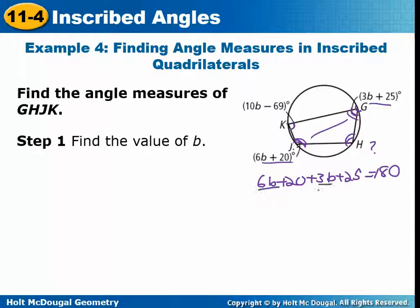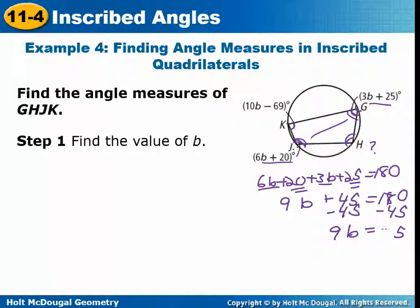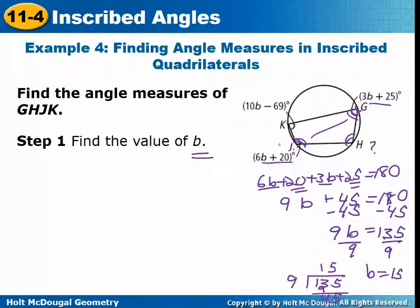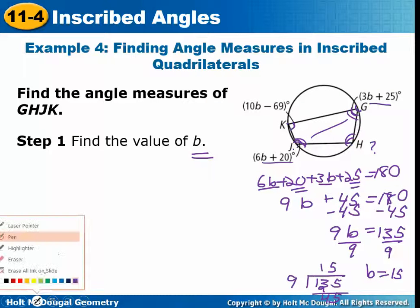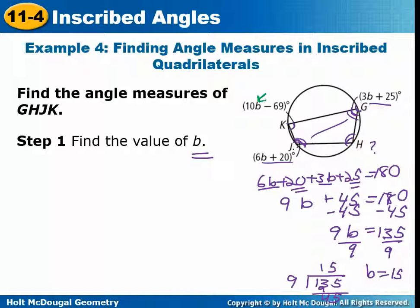Combining like terms: 6B plus 3B is 9B, and 20 plus 25 is 45. Continuing to solve: 9B equals 135, so divide by 9 and B equals 15. They ask for the angle measures, so once you find B, you plug it back into each expression for the angles.